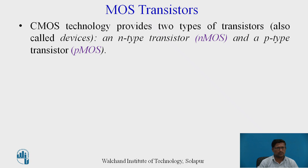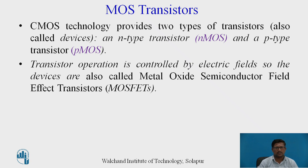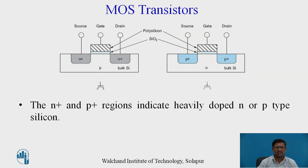CMOS technology provides two types of MOS transistors. The first type is the N-type transistor, known as NMOS, and the second is the P-type transistor, known as PMOS. Transistor operation is controlled by electrical fields, so the devices are called metal oxide semiconductor field effect transistors, or MOSFETs. In the figure, two types of MOSFET devices are shown: the NMOS device on the left-hand side and the PMOS device on the right-hand side.